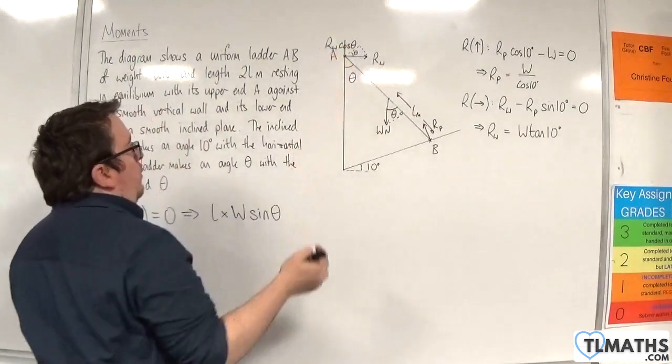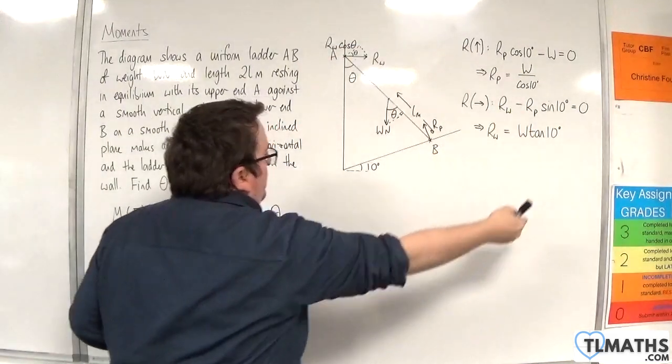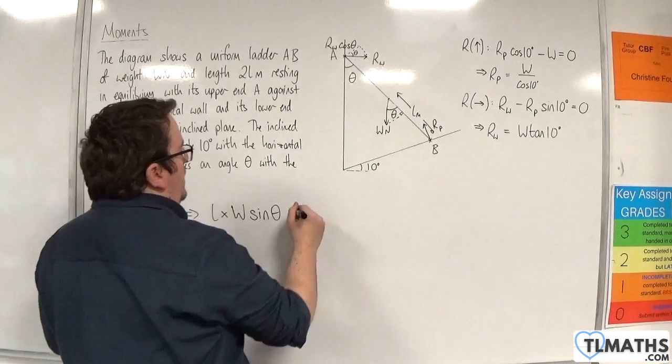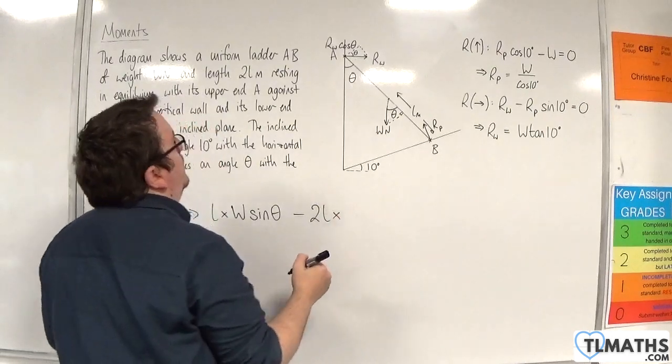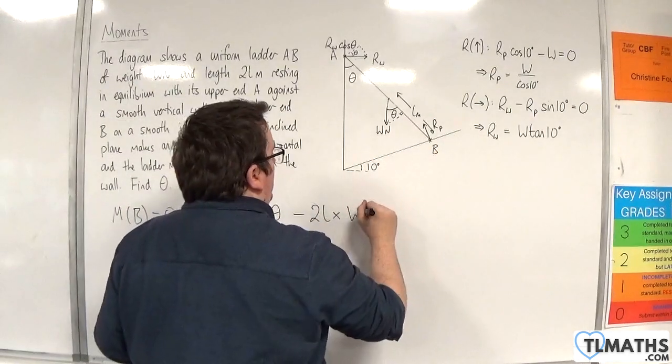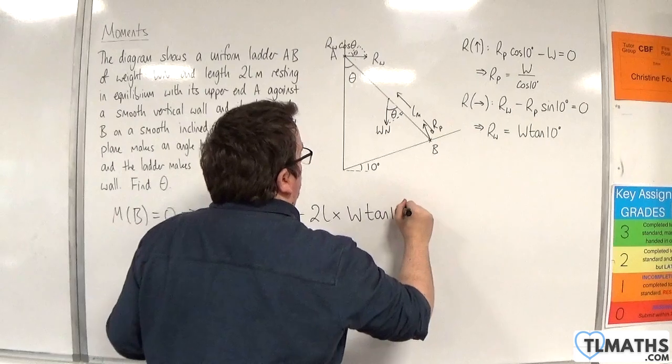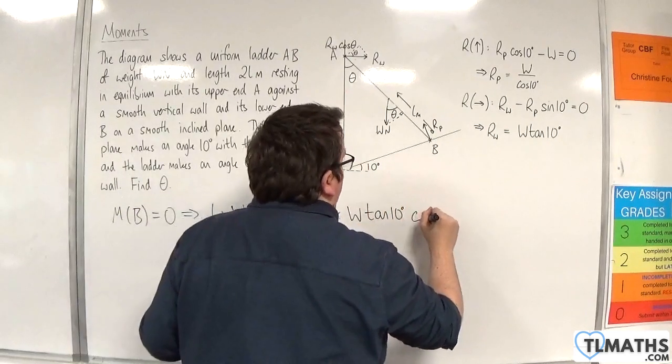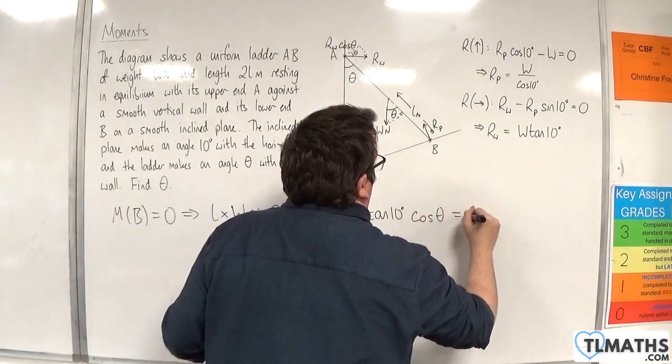Now, we're 2L away from that, and that's going to be going around in a clockwise motion. So, take away 2L times RW, which is W tan of 10 degrees, times cosine theta. And that's got to be equal to 0.